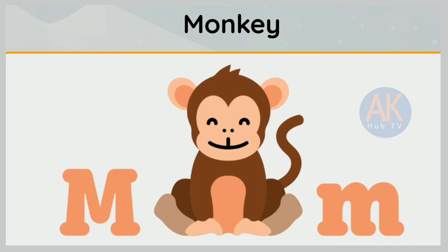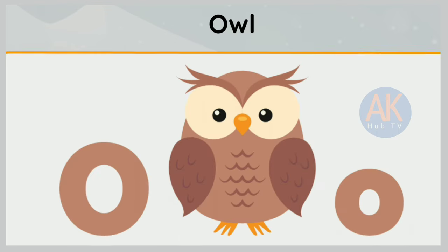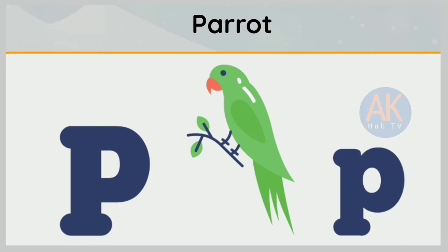M is for monkey. M, m, monkey. N is for nest. N, n, nest. O is for owl. O, o, owl.